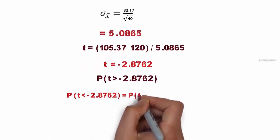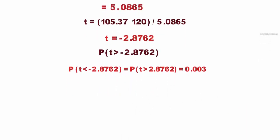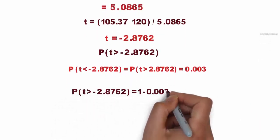P(t less than minus 2.8762) equals P(t greater than 2.8762) equals 0.003. Therefore, P(t greater than minus 2.8762) equals 1 minus 0.003 equals 0.997.